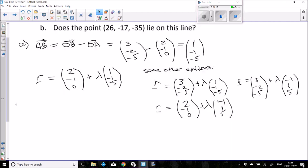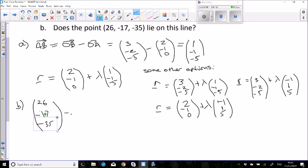In part b then, we want to know if this point lies on the line. Now all we do for that is we make our position vector that we want to know about, so just make that equal to our vector equation of the line. It doesn't matter which one you've got, you'll just end up with a different value for lambda at the end if it's on the line.